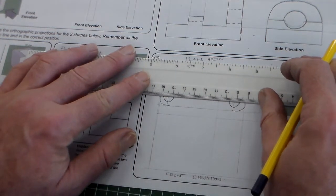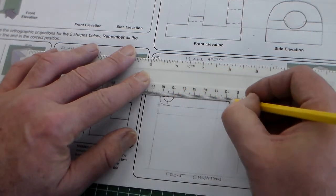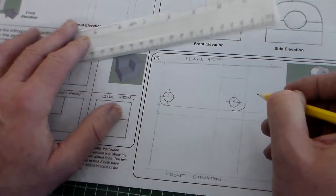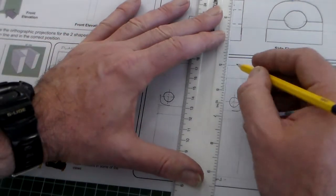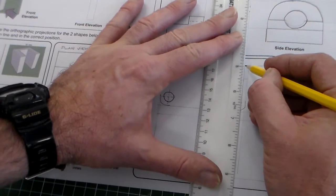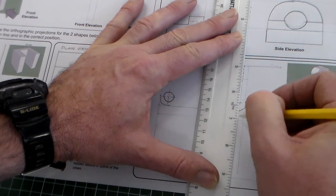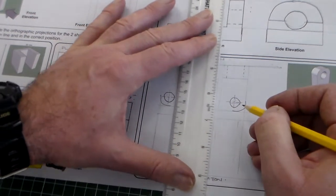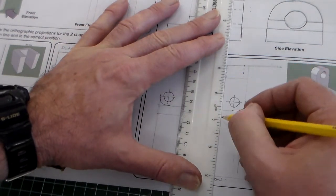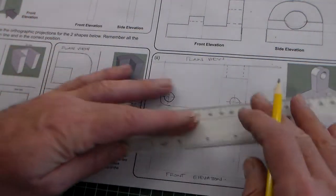If we were drawing with a circle template, we would actually draw our center lines first to allow us to locate. Now, we've got a hole here, a hidden detail, which we talked about earlier, and we can put that in. And we can also just project that down to here for the part here.